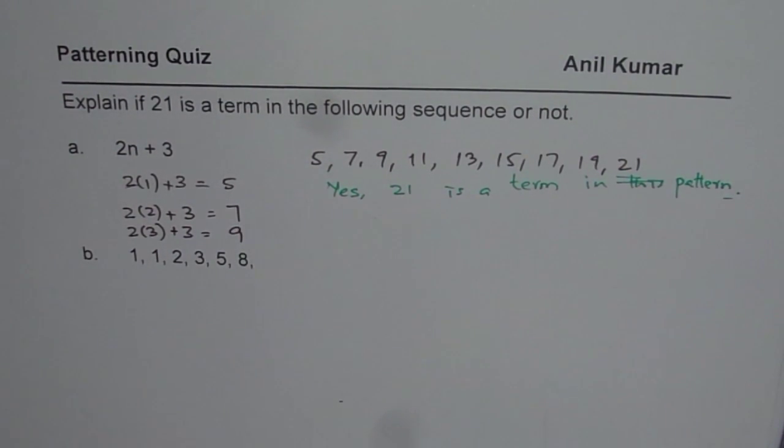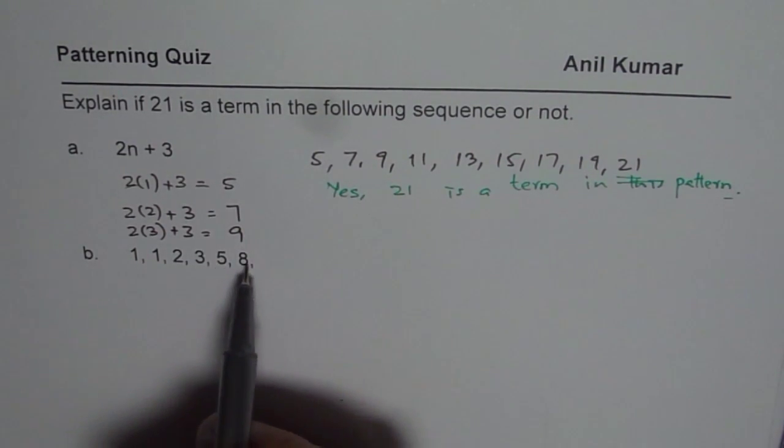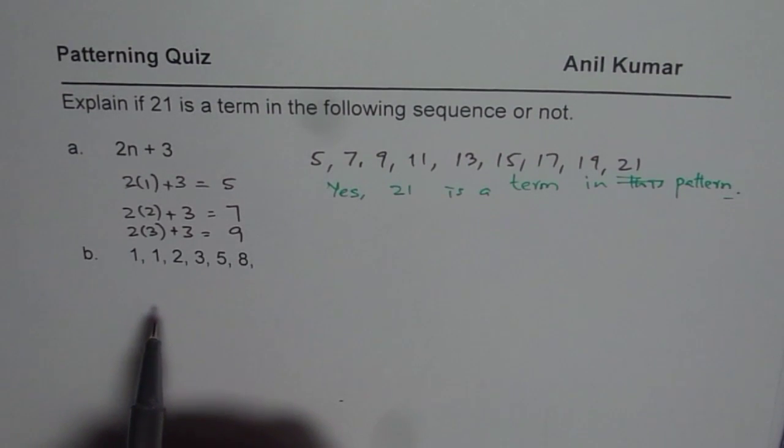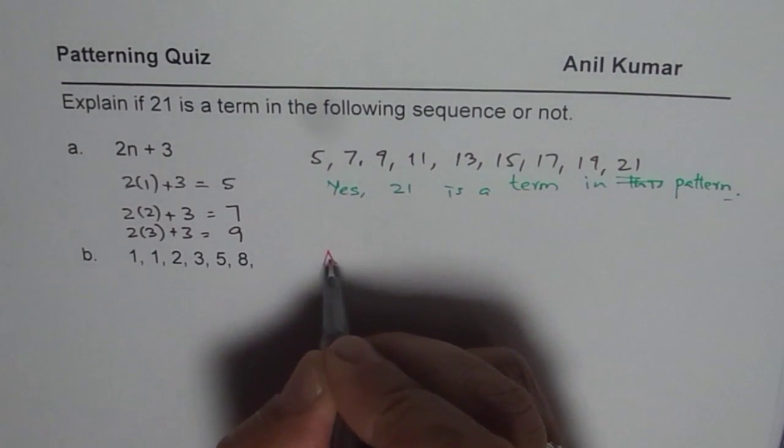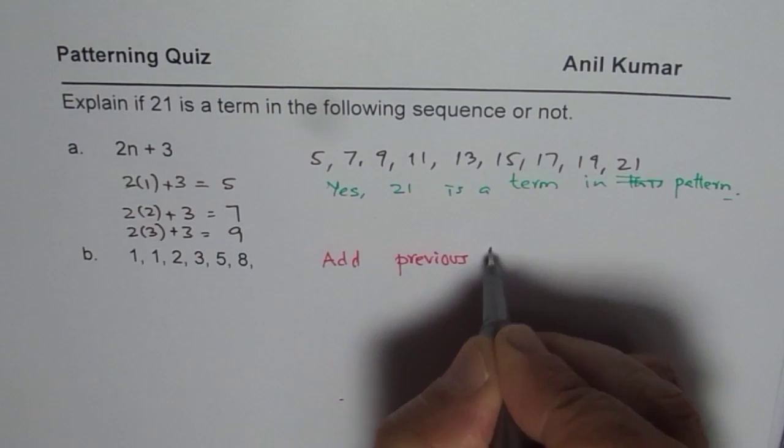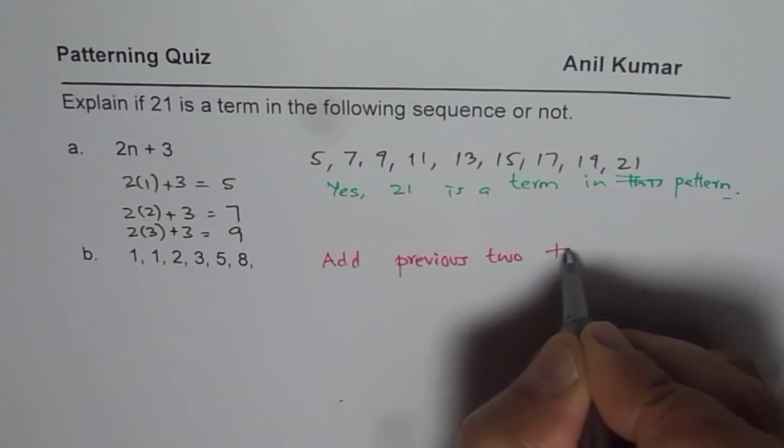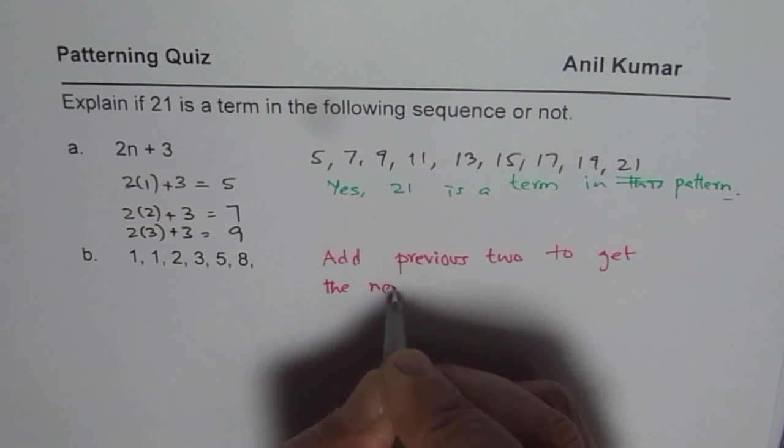Likewise, in the second case also you can extend the pattern: 1, 1, 2, 3, 5, 8. First question is to figure out how do we get the next number? 1 plus 1 is 2, 2 plus 1 is 3, 2 plus 3 is 5, 3 plus 5 is 8. So you add the previous 2.